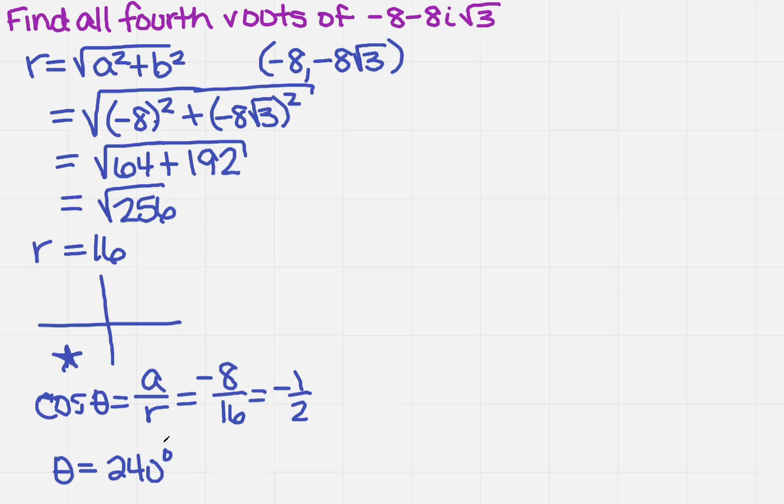And how would I write that in trigonometric form? Well, if I've got r and I've got theta, then I know I can write this in trigonometric form as, and I'm going to come up to the next column, and that would be 16 times the cosine of 240 plus i sine of 240. So far, so good.